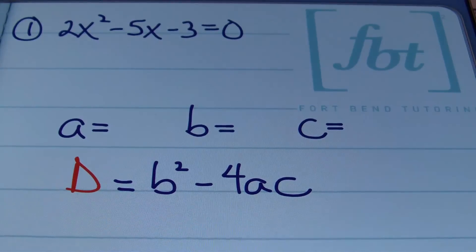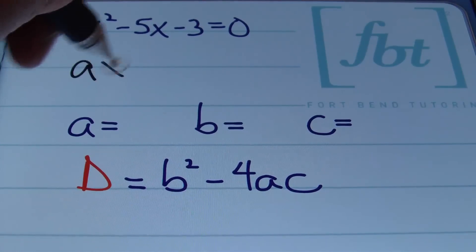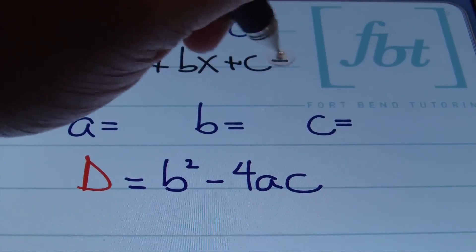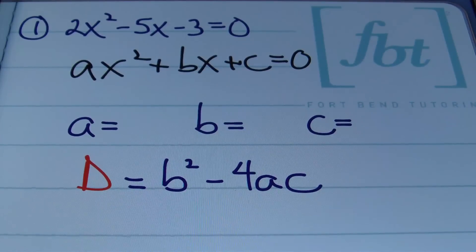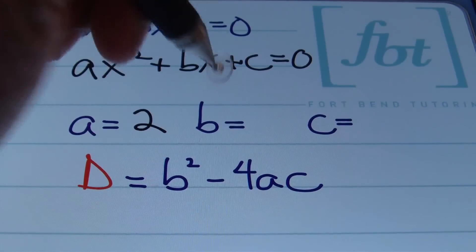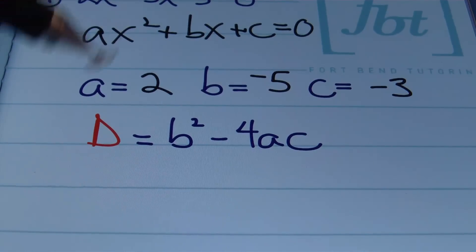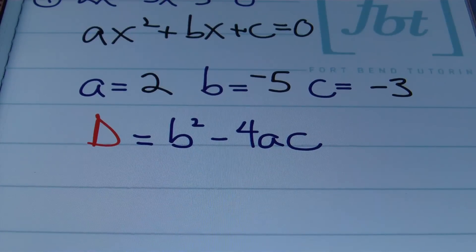In problem number one we have 2x squared minus 5x minus 3 equals zero. We need to find the discriminant, the type of solutions, and the number of solutions. The equation is already in standard form — ax squared plus bx plus c equals zero — so a equals 2, b equals negative 5, and c equals negative 3.